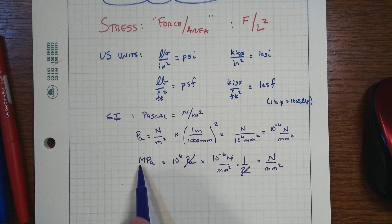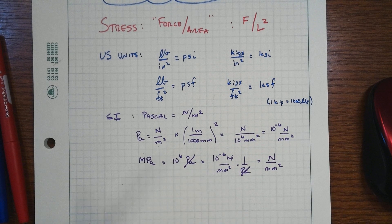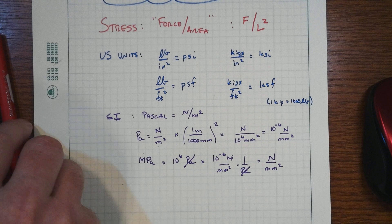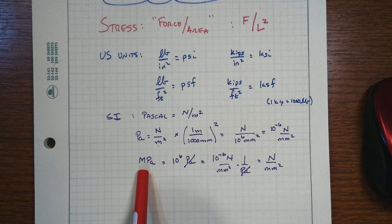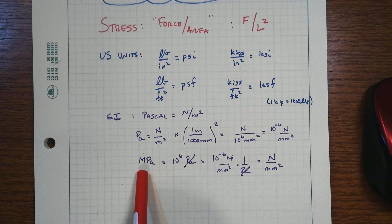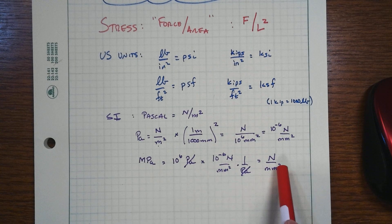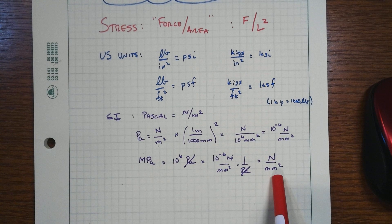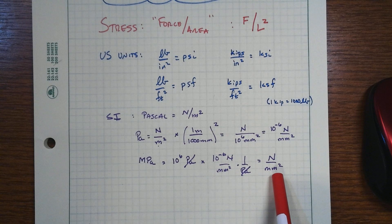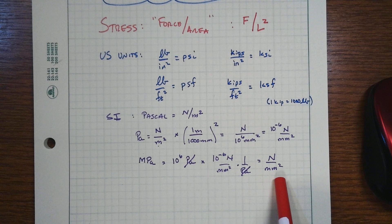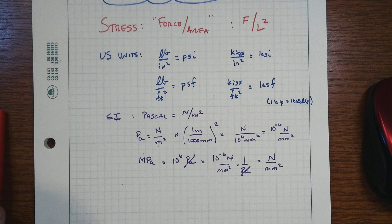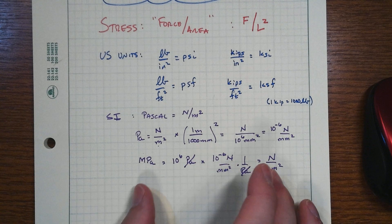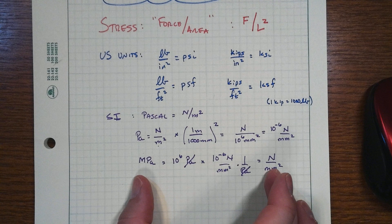And this is especially convenient for structural calculations. Again, a lot of strengths of steels will be on the order of 70 megapascal or 100 megapascal. But a megapascal is the same thing as a newton per square millimeter. And since the areas that we're oftentimes working with are far more conveniently expressed in terms of square millimeters instead of square meters, this is a very handy thing to be able to work with.